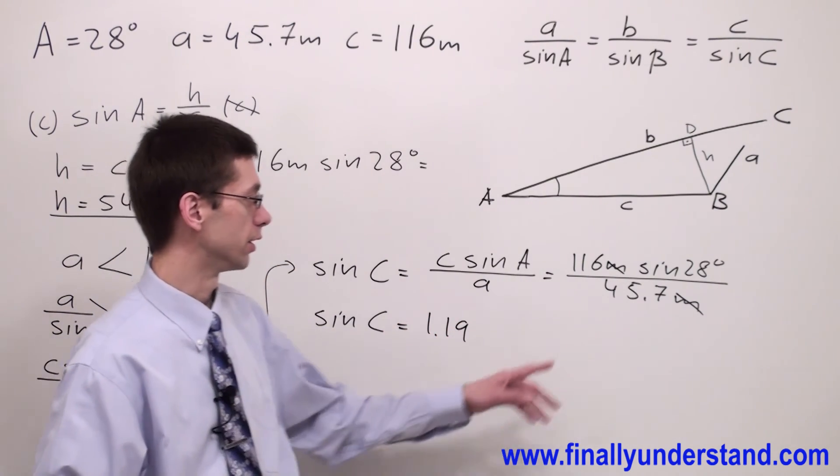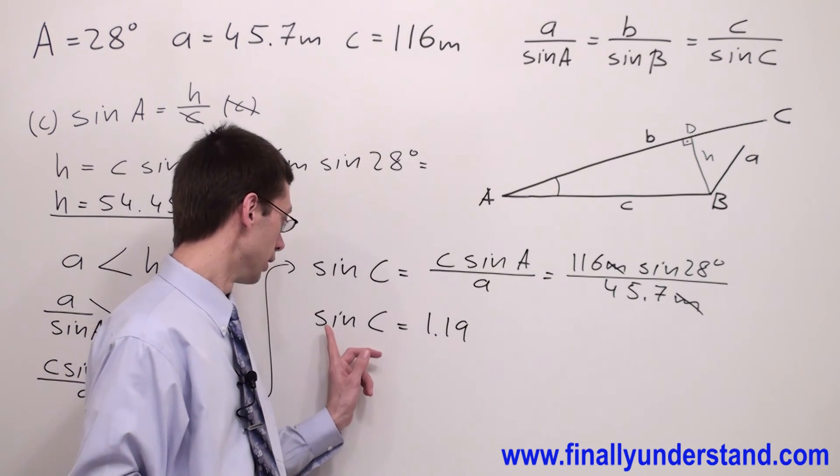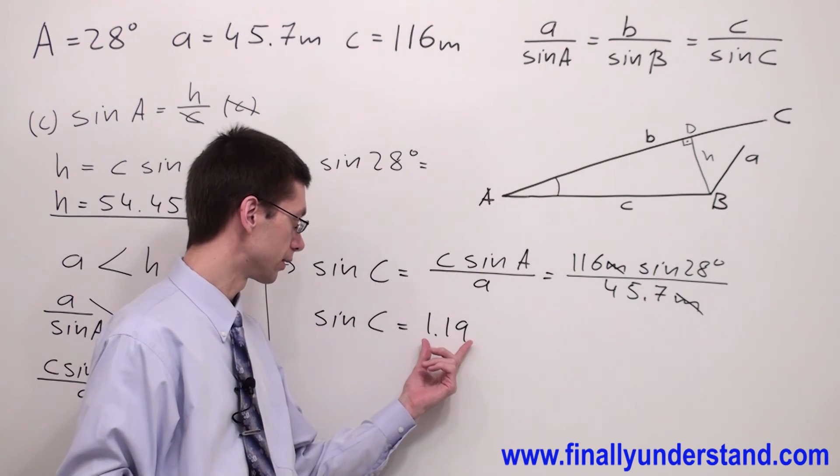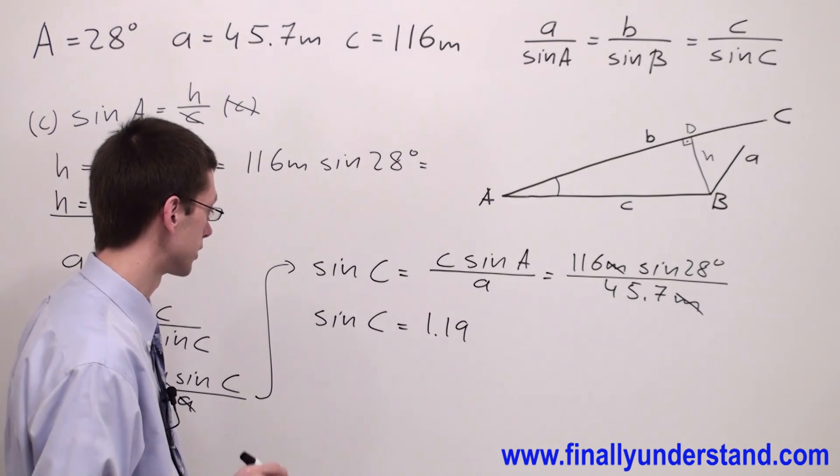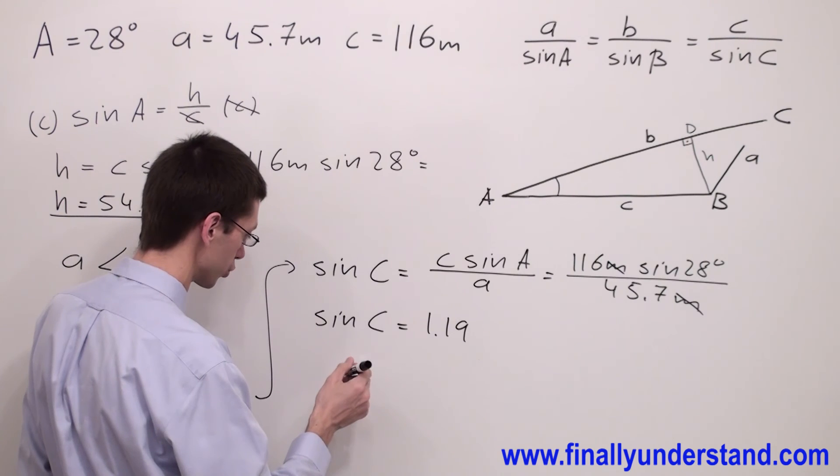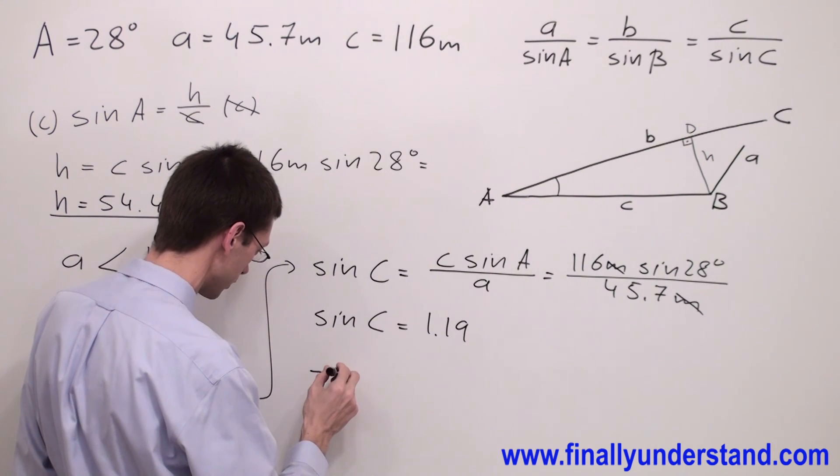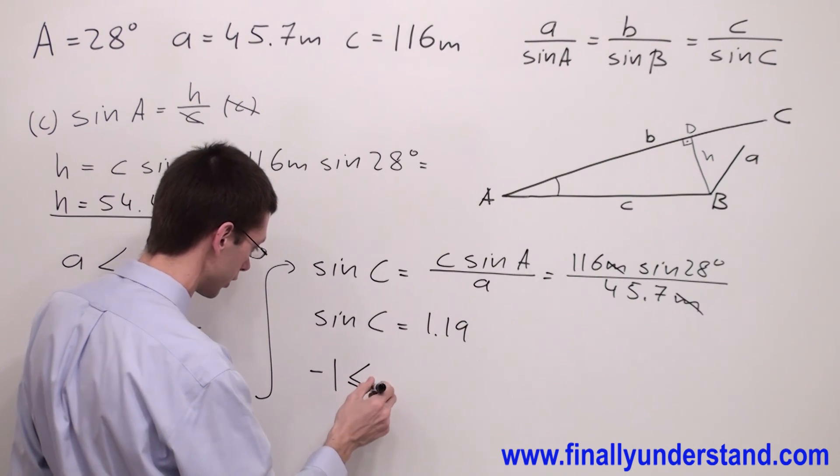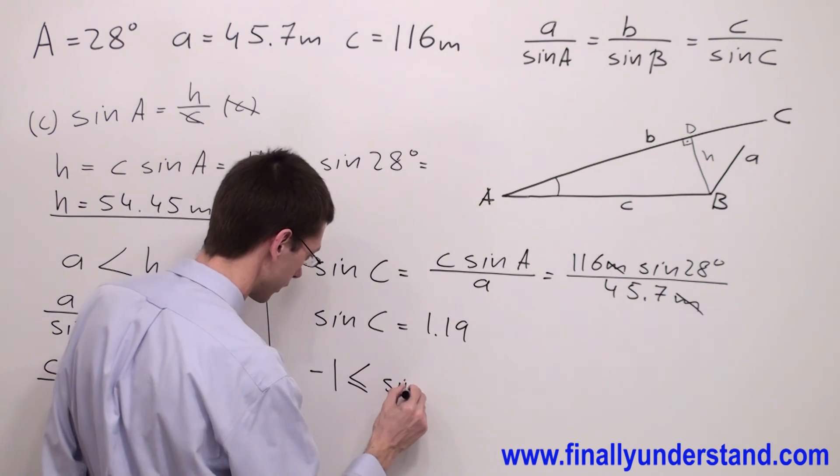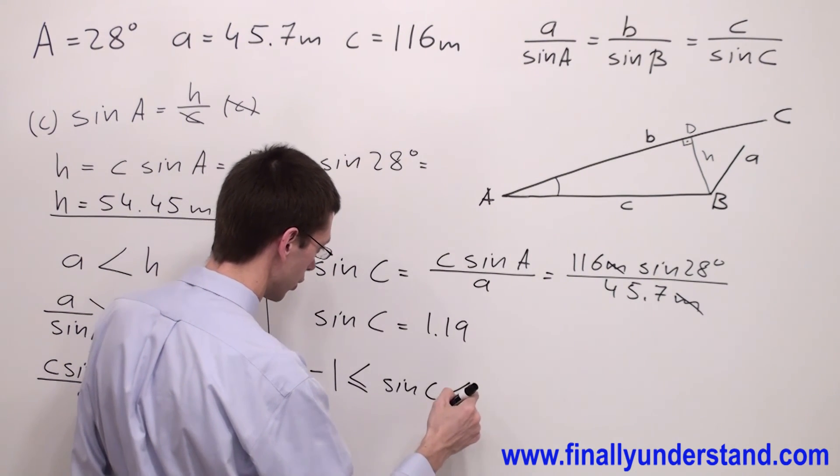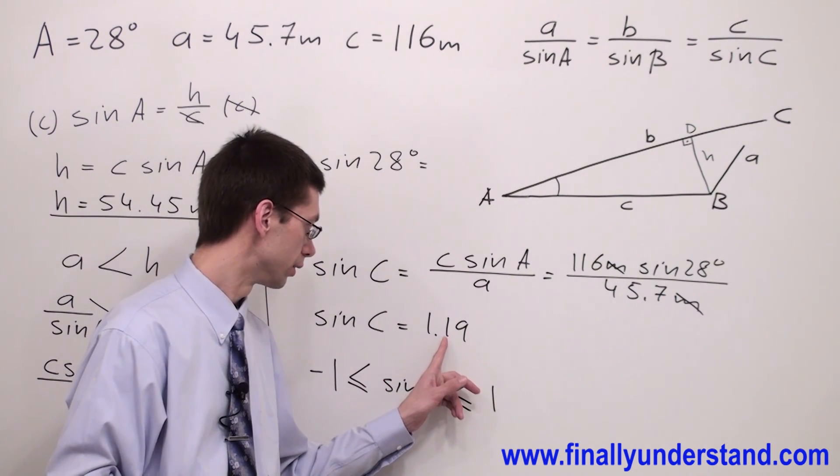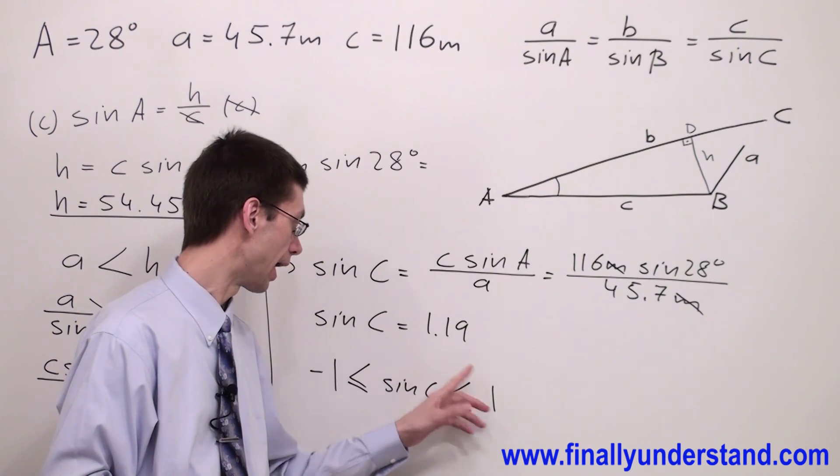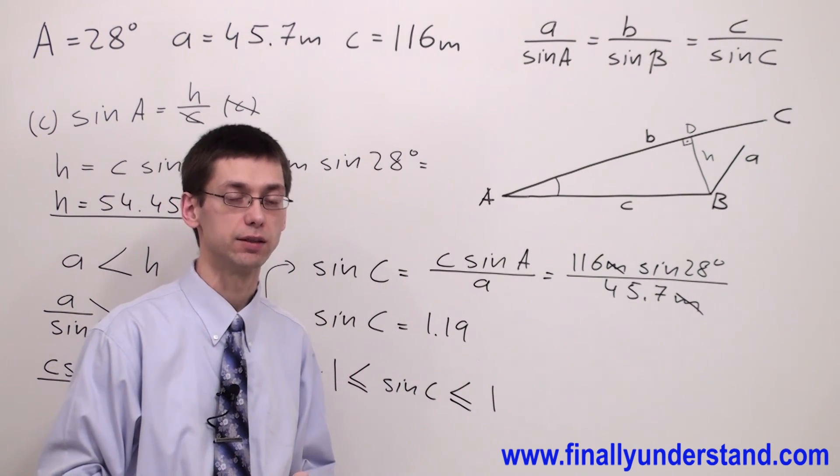Of course, you're supposed to use the calculator. Now please notice that sine of angle C equals 1.19. You're supposed to remember that the sine of any angle is supposed to have a value always greater than or equal to negative 1 and less than or equal to 1. We got value 1.19, so we are out of this range. So it means that the problem has no solution.